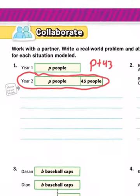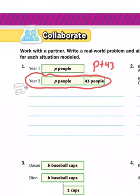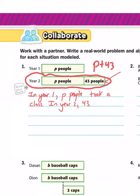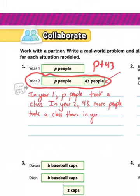In year one, P people took a class. For year two, we have to show that 43 people were added on — so in year two, 43 more people took a class than in year one. Then we just need a question: how many people took a class in year two?